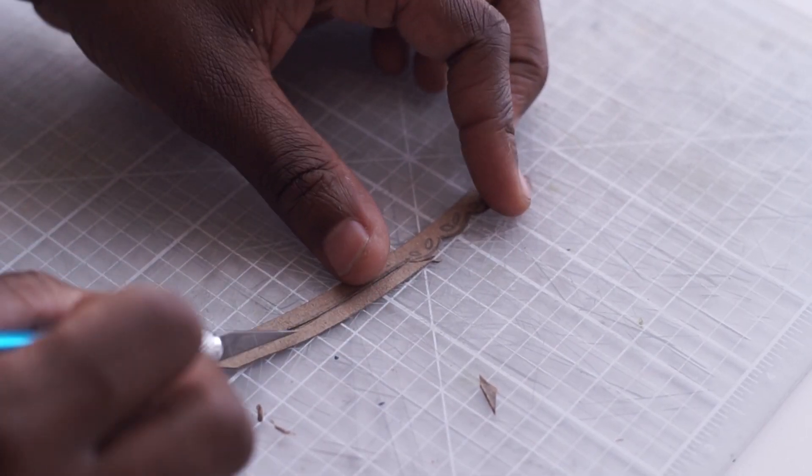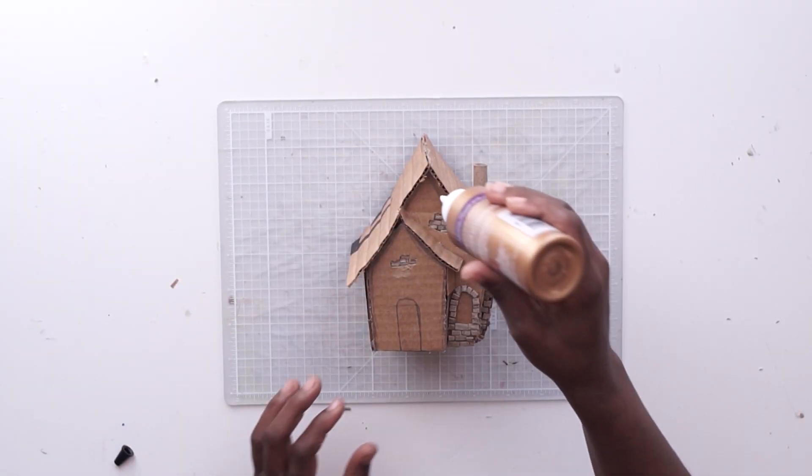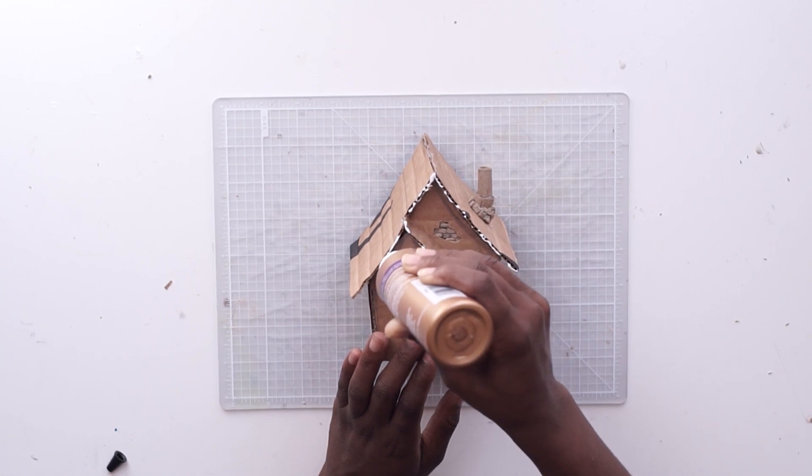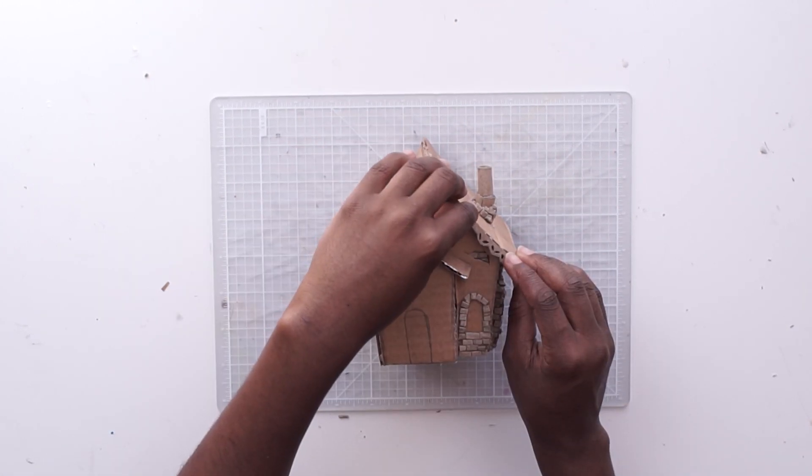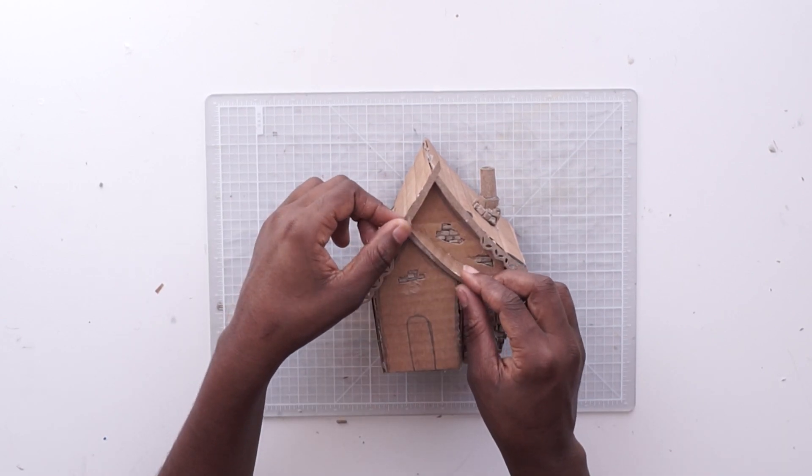Now, this cardboard is actually thinner cardboard that I got from a cereal box, and I'm using that for a lot of the decorative pieces on the tiny house, like the edges of the roof and some of the parts of the door, and also I used it to make the chimney.